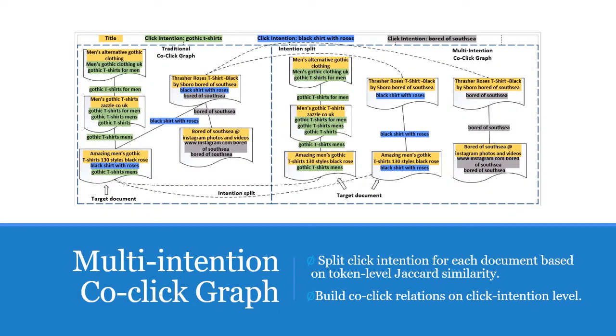To handle the multi-intention noises in traditional co-click graph, we propose the multi-intention co-click graph MICG for better neighbor connection. The key idea of MICG is to characterize and divide the clicks of each document into different intention groups based on token level Jaccard similarity, then we build the graph based on click intention group level but not on document level. More details of the click group algorithm can be referenced in our paper.